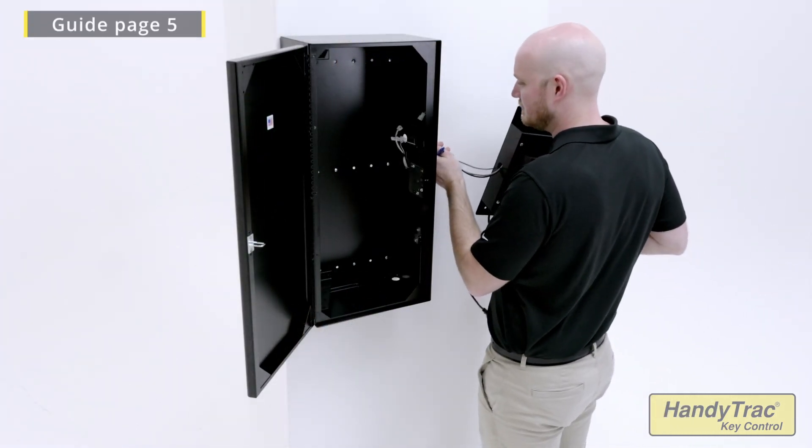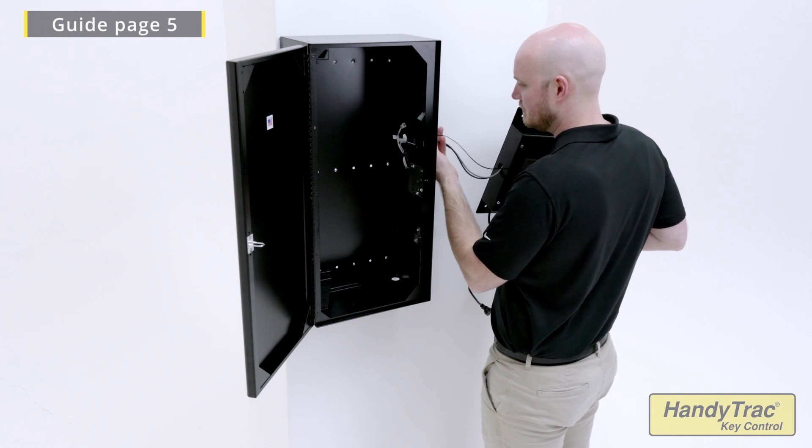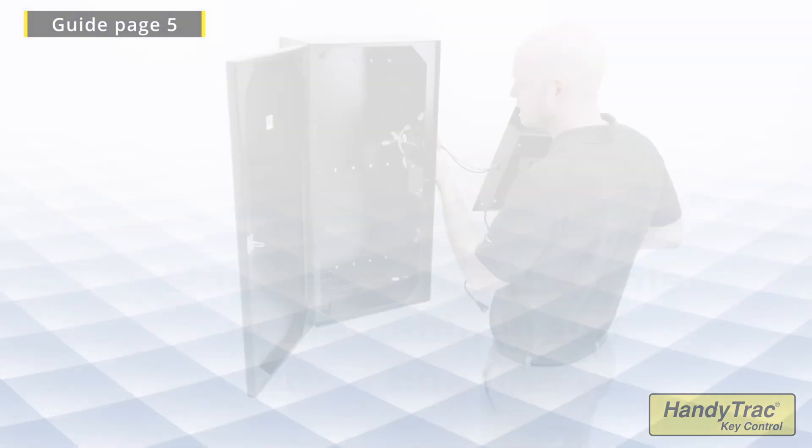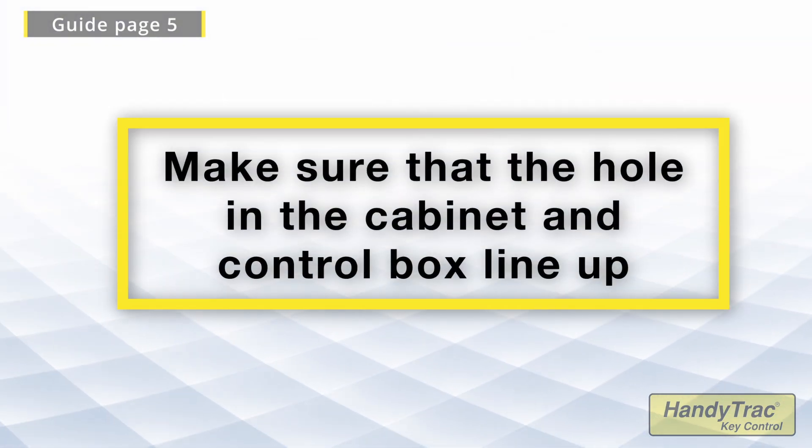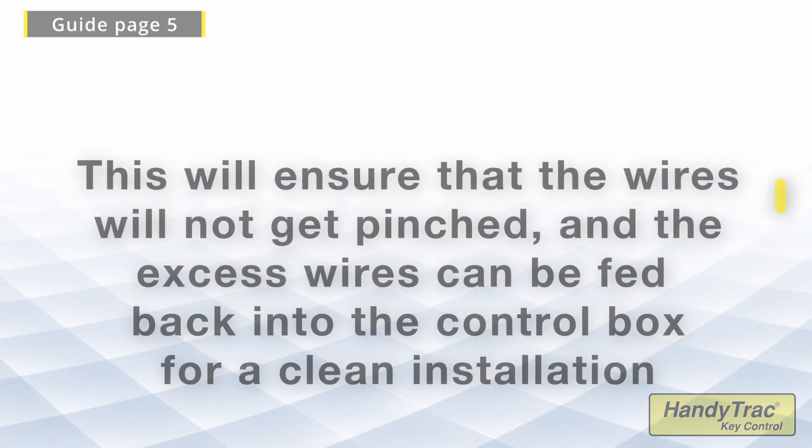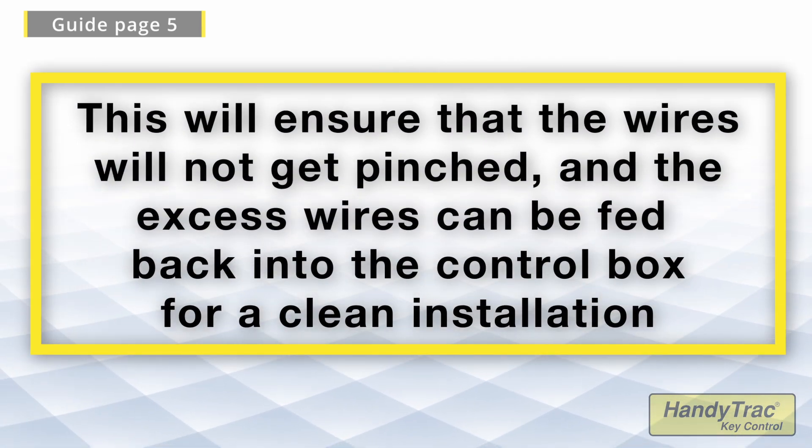With the control box in hand, fish the cables through the hole in the side of the cabinet. Make sure that the hole in the cabinet and control box line up. This will ensure that the wires will not get pinched and the excess wires can be fed back into the control box for a clean installation.